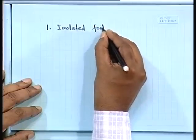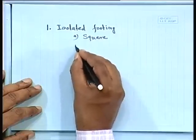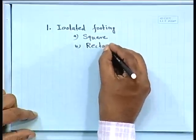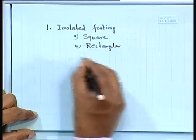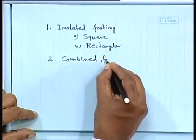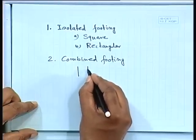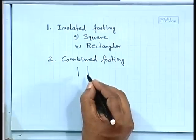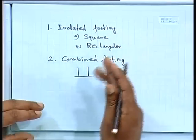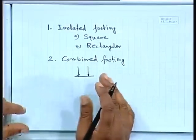Isolated footing may be square or rectangular. Then we can have combined footing — simply when two columns are so close that we cannot give individual isolated footings, in that case we give one combined footing. The combined footing could be for three or four columns also, but generally we make it for at least two. We can find out the footing size and all those things for combined footing as well.